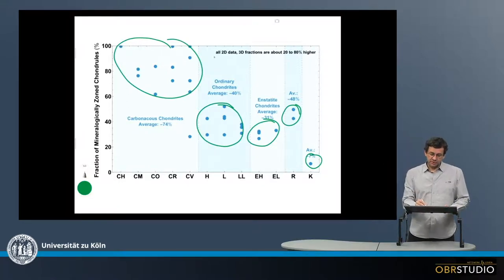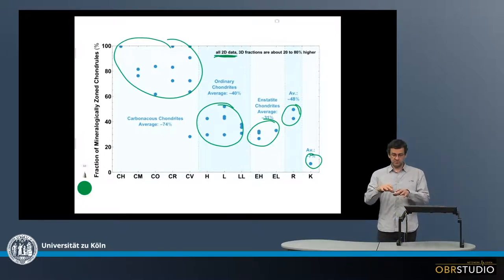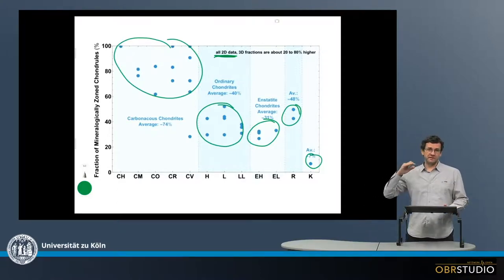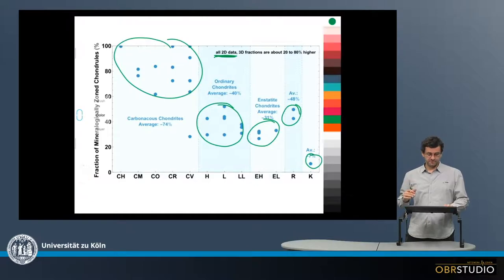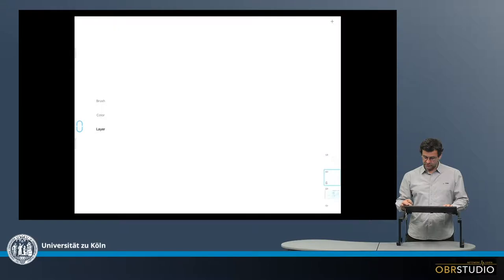And all these data are 2D data, which means we look in a thin section for the zoned chondrules and simply count them. However, we might make a mistake because we are cutting the chondrules. And here I want to illustrate what this error might produce.